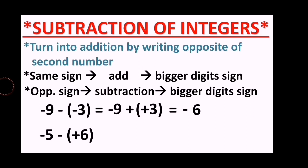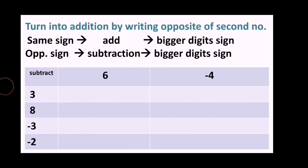The second question is negative 5 minus positive 6. The first number stays as is, the subtraction sign becomes addition, and we write the opposite of the second number: positive 6 becomes negative 6. Now we have negative 5 and negative 6 - same sign - so we add: 6 plus 5 equals 11. The bigger digit sign is negative, so the answer is negative 11.